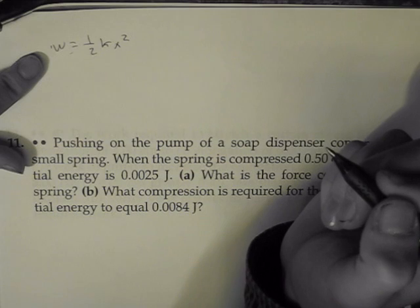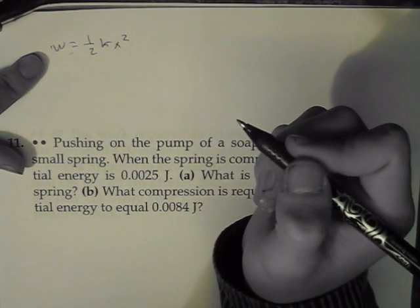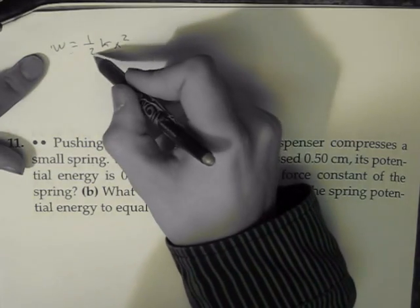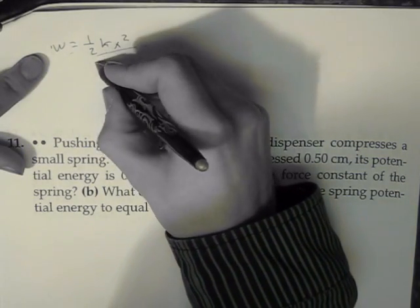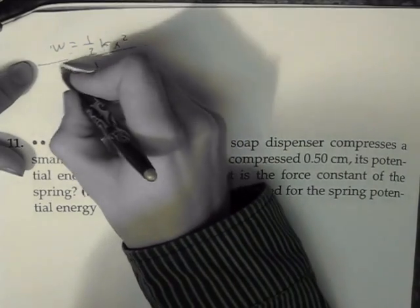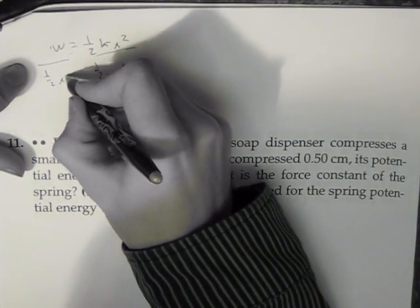Well, before we start plugging in numbers, let's rearrange this equation so we can solve for k. So we would just divide this whole part by 1 half x squared, and this part by 1 half x squared.